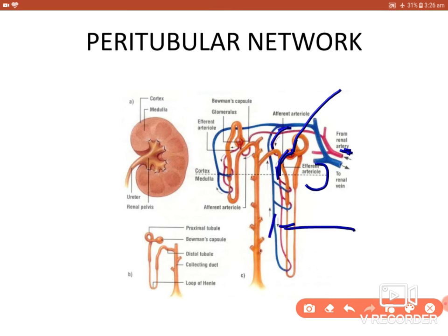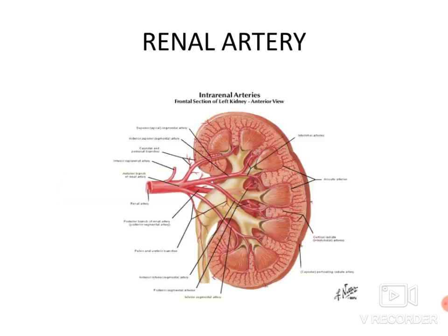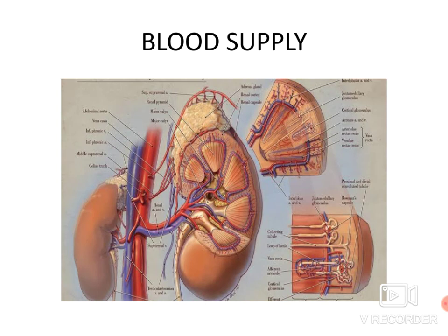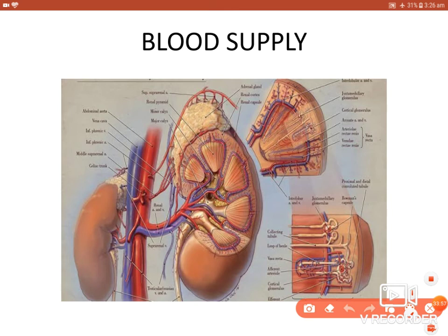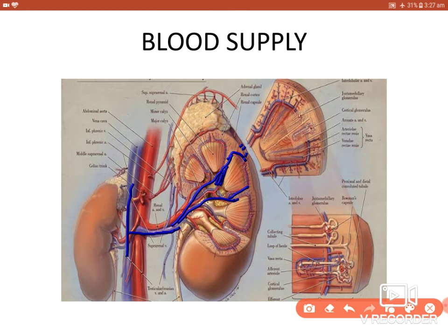The efferent arterioles form a peritubular capillary network and vasa recta arterioles and venules. From there, interlobular veins are formed, which join to form arcuate veins, then interlobar veins, which unite to form the renal vein draining into the inferior vena cava. Unlike the arterial side, there are no distinct interlobar or segmental veins on the venous side.